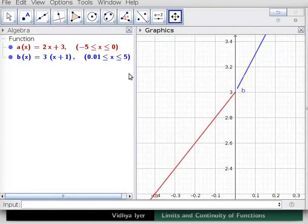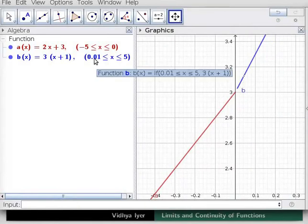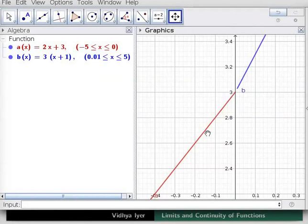This is because x is not 0 when f of x is 3 times x plus 1. The red function has to be considered for x less than and equal to 0.